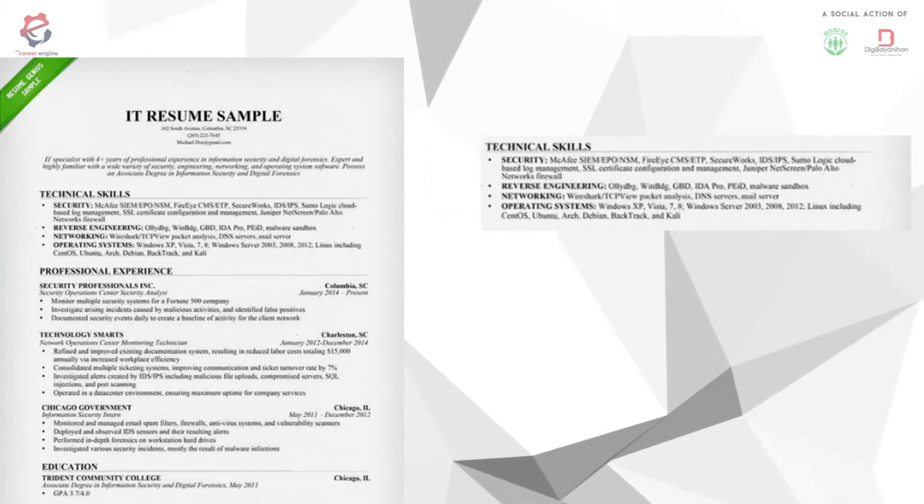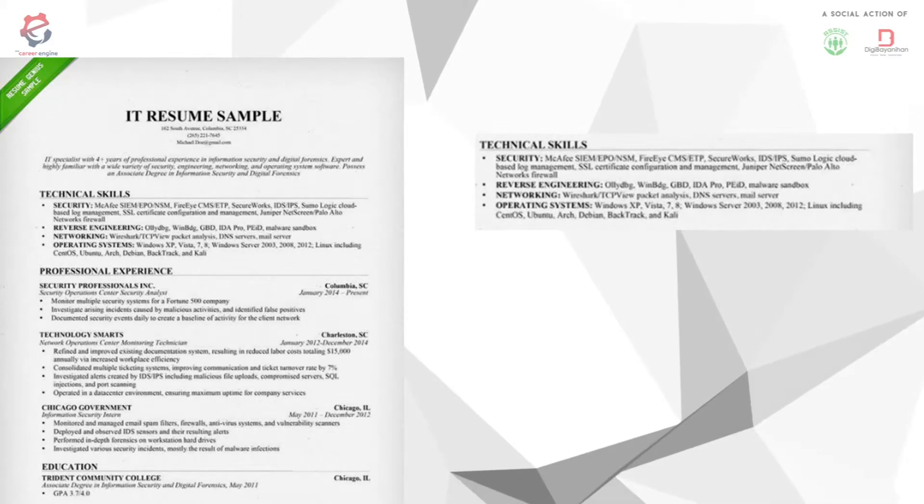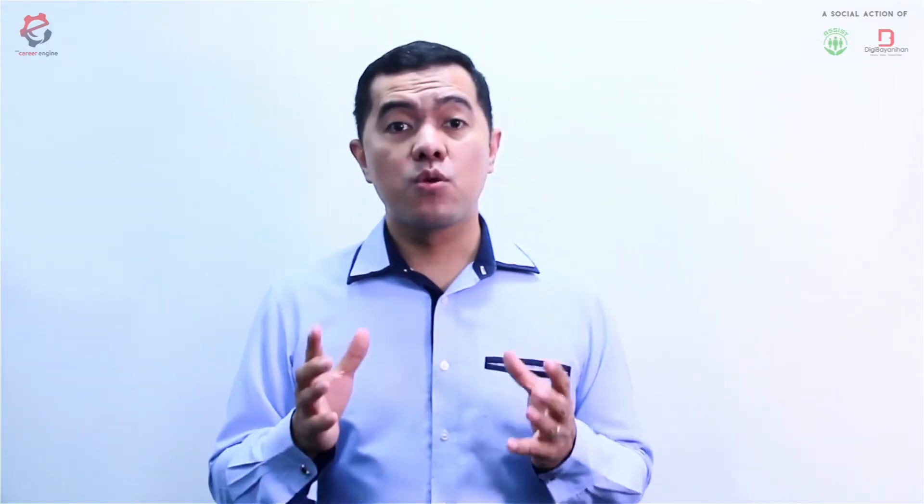IT professional: when applying for an IT job, it is very important to highlight the technical skills that you possess. These skills can include proficiency in programming languages like C++ or Java. These are skills that separate you from others. Knowing how to code and work with different languages helps employers decide how versatile your skill sets are, so if you know a lot of programming languages and have worked with them on projects, make sure you mention them in the technical skills section.